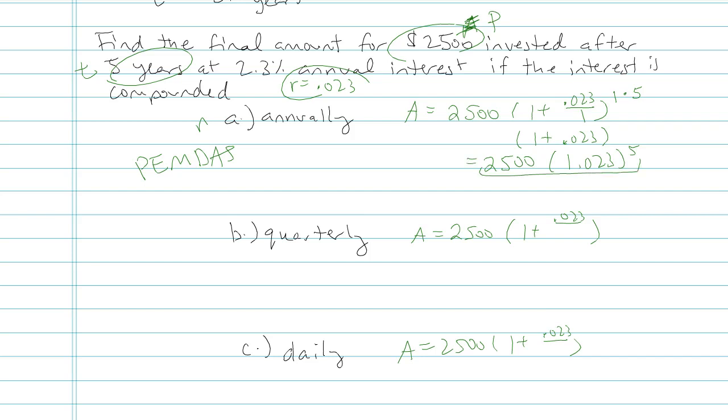Depending on what calculator you have, you might be able to type it in from left to right. Other people, like if you have a graphing calculator, like a TI grapher, you could start with just 2500 parentheses 1.03. And then to do a fifth power, you're going to do a little arrow up, and that's the button that's above the division sign.